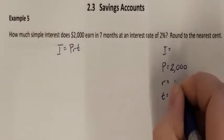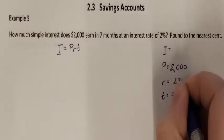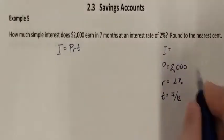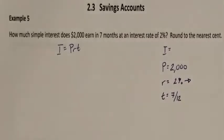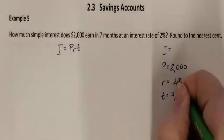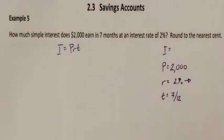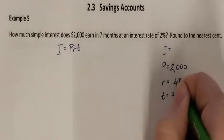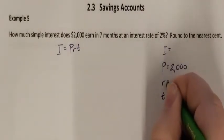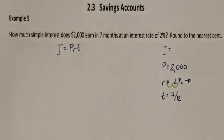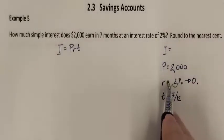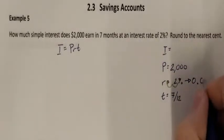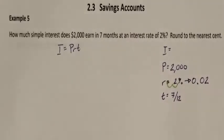I have an interest rate of 2%. I need to change this into a decimal. There is no decimal point visible, which means the decimal point is currently hidden at the back. You move it two spaces to the left to get your new decimal point — so it's 0.02.